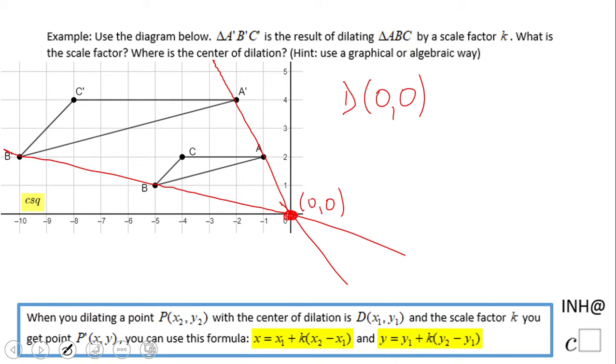Now for the scale factor, you have a couple choices. One is you can take a look at, for example, AC. AC, if you notice, is three units long. What about A prime C prime, which is the corresponding side to that triangle? One, two, three, four, five, six.